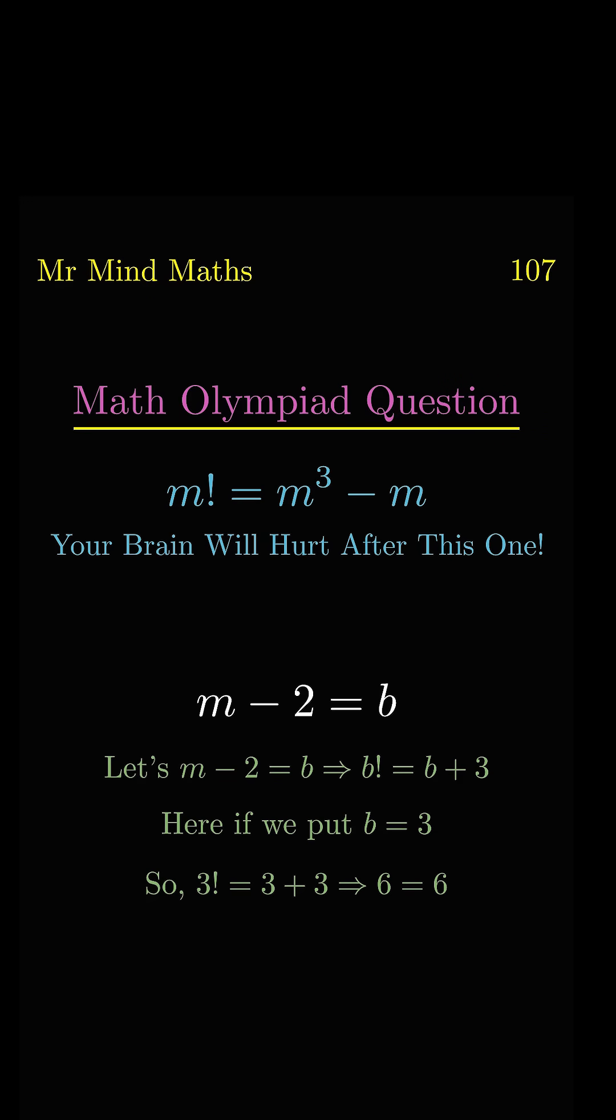Now we will start from m minus 1 equals m plus 1. Now 2 will shift to the right side, so it will become m equals b plus 2. Now here we will put b equal 3, so finally we get m equal 5, which is the final answer.